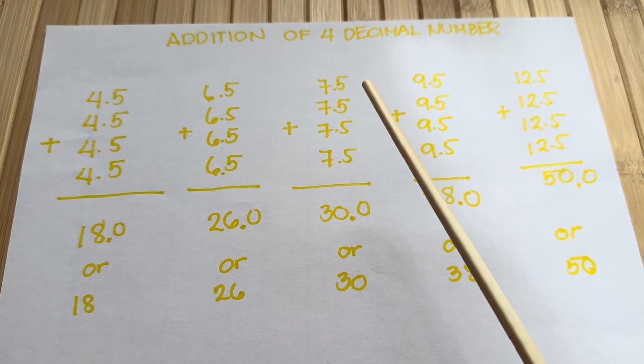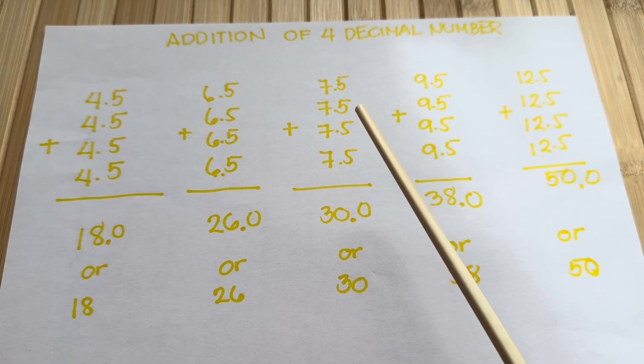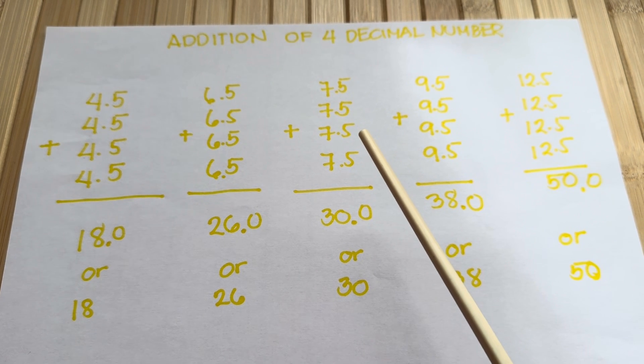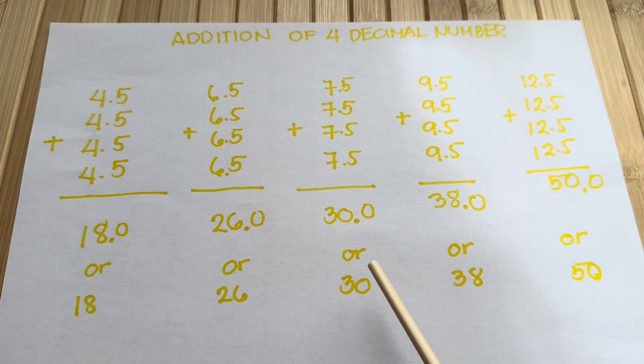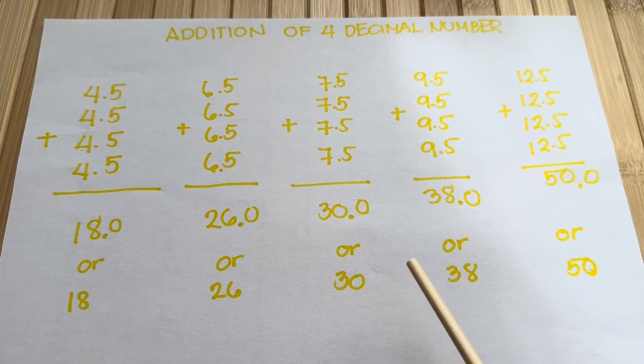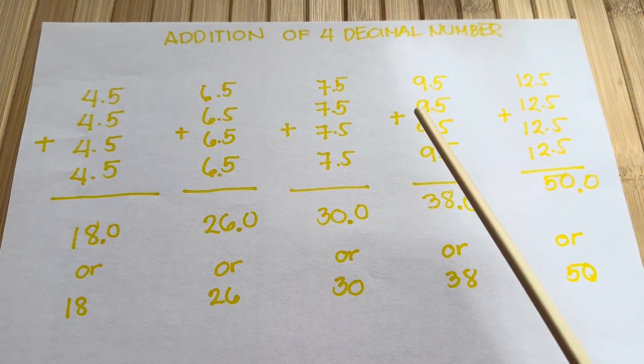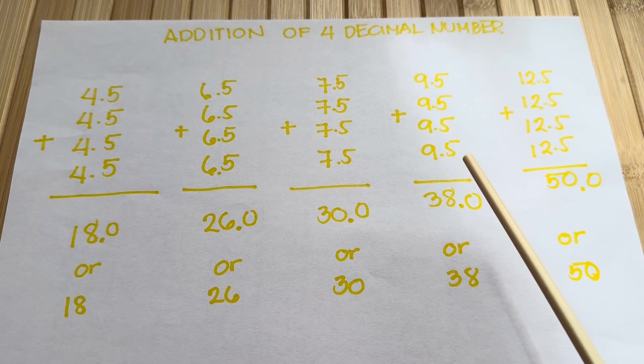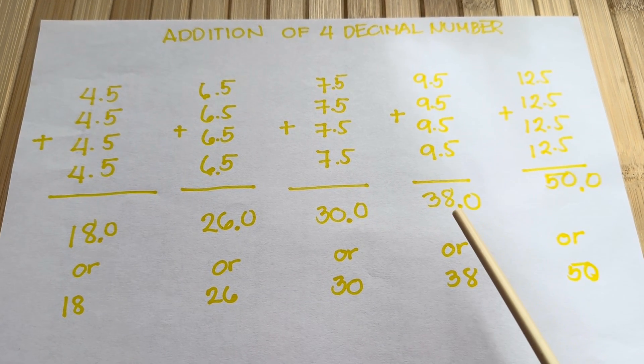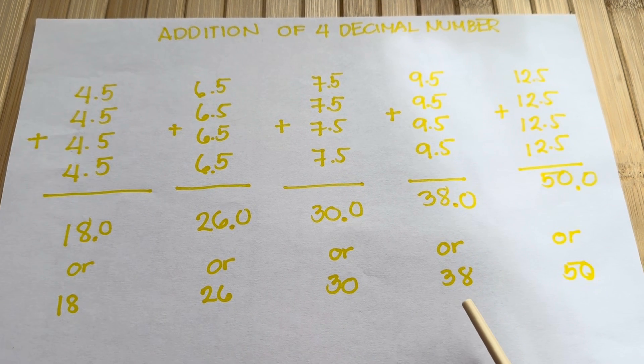Let's try another one. 7.5 plus 7.5 plus 7.5 plus 7.5 is equals to 30.0 or 30. 9.5 plus 9.5 plus 9.5 plus 9.5 is equals to 38.0 or 38.